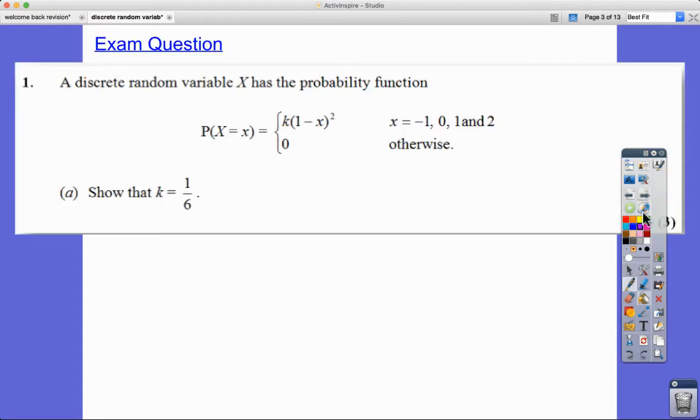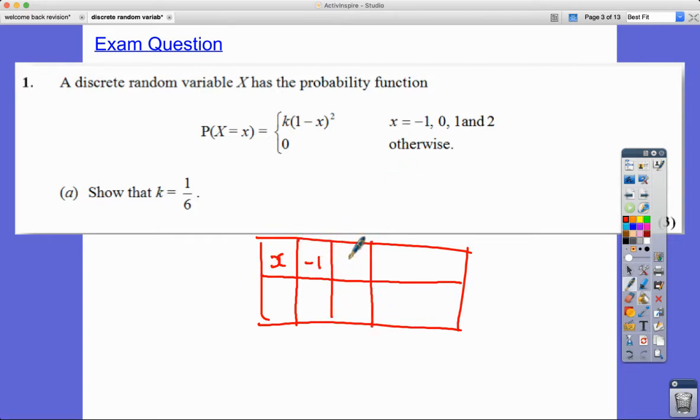Now, here's how a question might be presented in an exam. So we have a discrete random variable X with the probability function, the probability that x equals x is k(1-x)² and zero otherwise for x = -1, 0, 1, 2. So what that really means is, and that's what I prefer to do, I do like to do a table to show this. So I've got my x values that are given to me. So I've got minus one, I've got zero, I've got one, and I've got two.